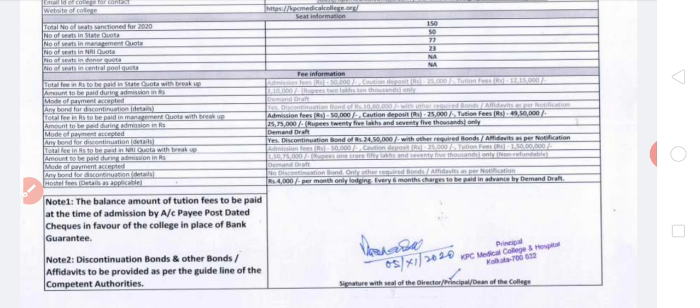The mode of payment is demand draft. The bond for discontinuation — discontinuation means if you leave the course in between, since you would be wasting a seat — the discontinuation bond is ₹10,80,000. Basically, before leaving you have to pay the entire course fee along with other required bonds or affidavits as per notification of the college.